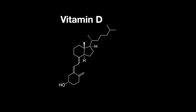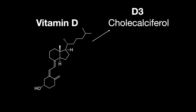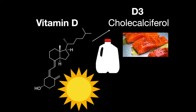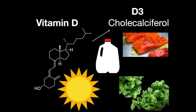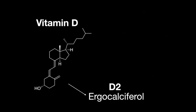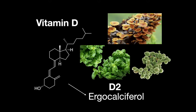Vitamin D comes in two forms: D3, or cholecalciferol, and D2, or ergocalciferol. D3 you can get from exposure to the sun, ingesting fish, milk, and plants. D2 you can get from plants, fungus, and yeast.